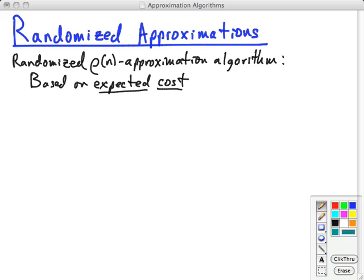Let's look at randomized approximations. A randomized ρ(n) approximation algorithm is defined exactly the same as a regular ρ(n) approximation algorithm but it's based on expected cost rather than the actual cost. That's the only thing that's different. We're going to be interested in polynomial ρ approximation algorithms.